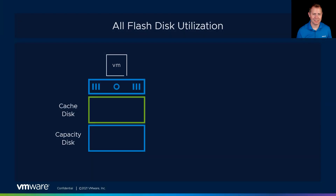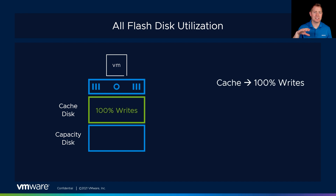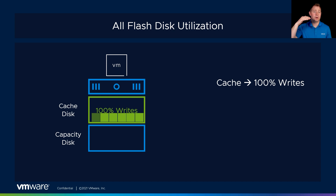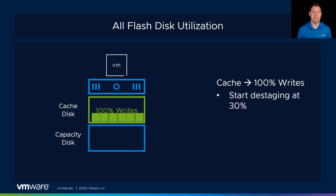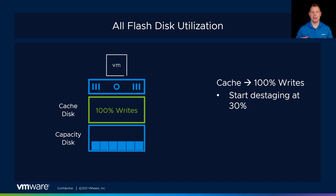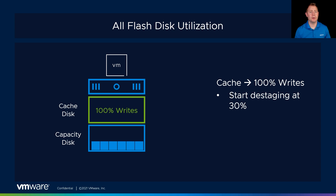Let's talk about our cache disks. In an all-flash environment, we use that cache disk 100% for writes. So all the writes coming from that VM hit that cache disk first. Then as our cache disk starts filling up, we start de-staging the data down to our capacity tier, and we start that at about the 30% watermark. So if I've got a 100-gig disk — easy math — at 30 gigs we would start de-staging. Not because we have to, but because we might get a bunch of writes in the future, so we be proactive and start moving that data down.